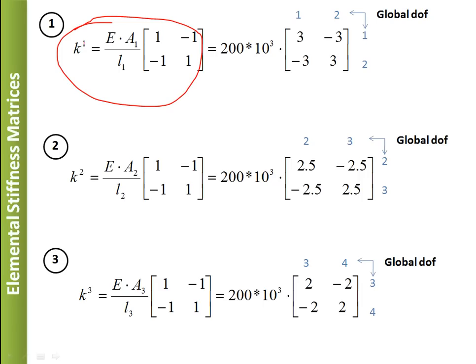The elemental stiffness matrix equation is: K⁽ᵉ⁾ = (EA/L) × [[1, -1], [-1, 1]]. Young's modulus E is common for all elements, so we take it outside and compute the A/L ratio for each element. For element 1: A1/L1 = 600/200 = 3. For element 2: A2/L2 = 500/200 = 2.5. For element 3: A3/L3 = 400/200 = 2.